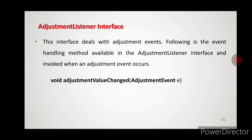Next is the adjustment listener interface. This interface deals with adjustment events — when we use a scroll bar to adjust something, adjustment events are generated. To handle the adjustment event, the adjustment listener interface will invoke the adjustment value changed method, which is called whenever an adjustment event occurs.